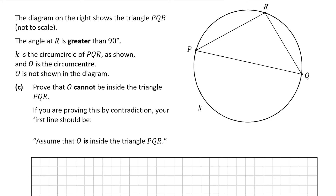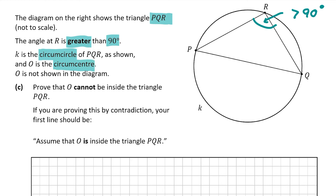Let's move on to question C. The diagram shows triangle PQR, where the angle at R is greater than 90 degrees. K is the circumcircle of PQR — the circle around the circumcenter, as we constructed in question A. O is the center of that circle but is not shown in the diagram, and we're asked to prove that O cannot be inside the triangle PQR.